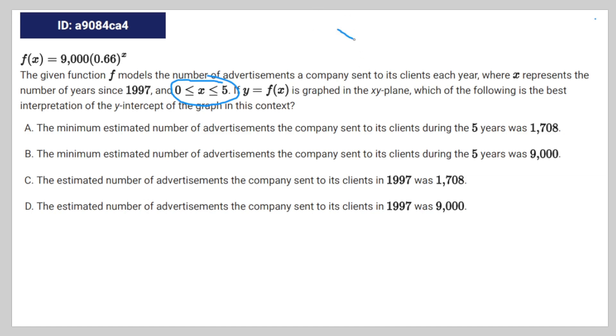So the y-intercept is going to be whenever x is equal to 0. In this context that means it's going to be 0.66 to the power of 0, which is equal to 1. So it's going to be equal to 9,000 as a whole, because 9,000 times 1 is equal to 9,000. Therefore it can be answer A or C.